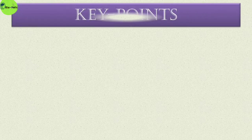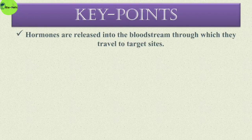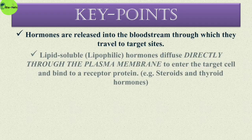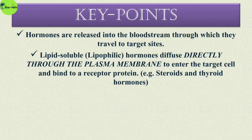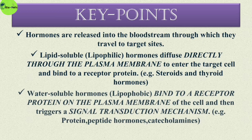Before starting the lesson, keep some important points in mind. Number one: hormones are released into the bloodstream through which they travel to their target site. Number two: lipid soluble, that is lipophilic, hormones diffuse directly through the plasma membrane to enter the target cell and bind to a receptor protein — lipophilic hormones include steroids and thyroid hormones. Number three: water soluble, that is lipophobic, hormones bind to a receptor protein on the plasma membrane of the cell and then trigger a signal transduction mechanism.